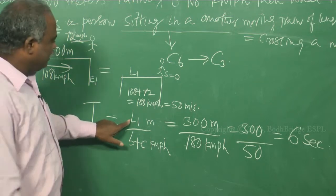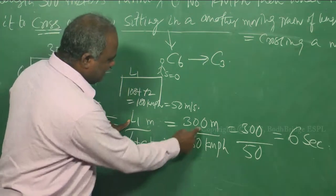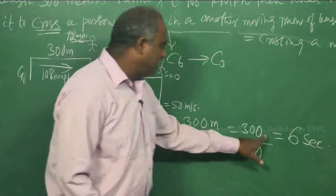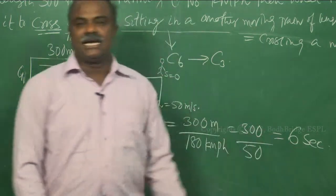So now use this again. c3 is nothing but l1 by b plus c, 300 by 180, and 300 by 50, 6 seconds, okay?